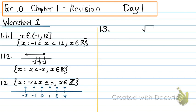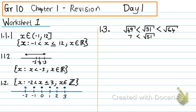Number 1.3: determine without a calculator between which two consecutive integers the square root of 51 lies. I need to find square numbers smaller than and greater than 51. A square number smaller than 51 is 49, and greater is 64. The square root of 49 is 7 and the square root of 64 is 8. So the square root of 51 lies between 7 and 8.